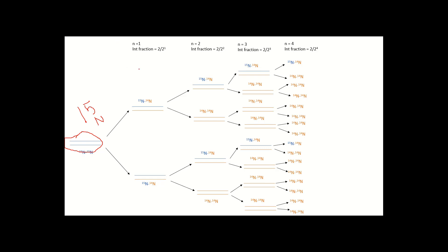To clarify the density terms: heavy DNA is when both strands are ¹⁵N. Intermediate density DNA is when one strand is ¹⁵N and the other is ¹⁴N, since ¹⁴N is slightly lighter than ¹⁵N. We need to find the fraction of total DNA that has this intermediate density.